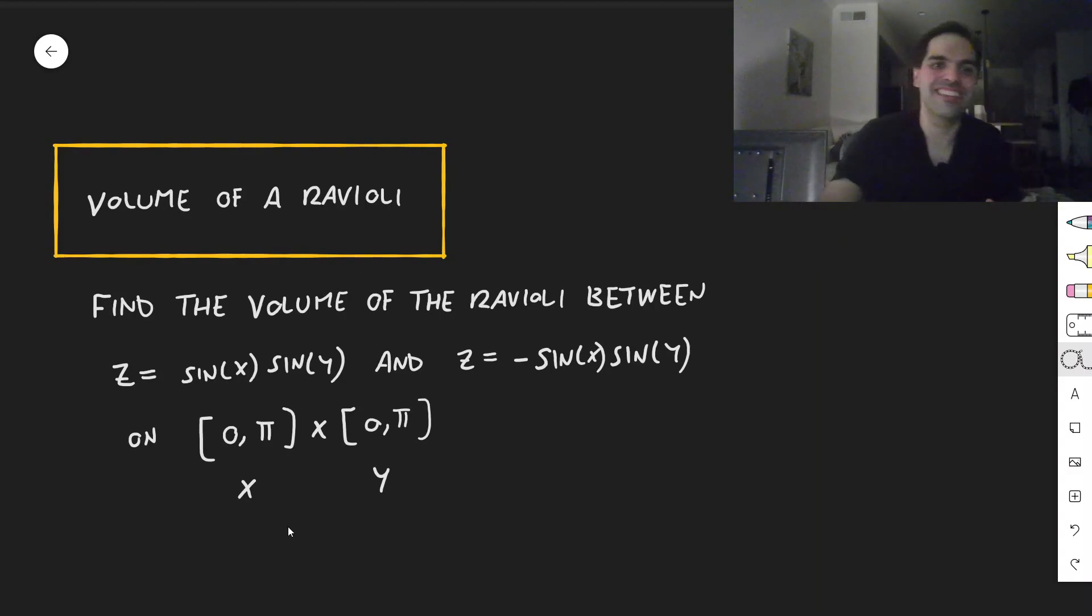And the amazing story is I will actually go to Texas A&M next year. Like, what are the chances? Anyway, as cool as this story is, this integral, because it turns out to find a volume of this ravioli, we have to find a double integral.